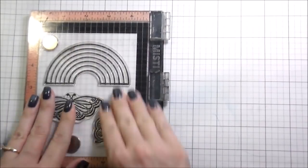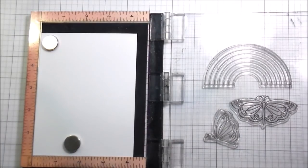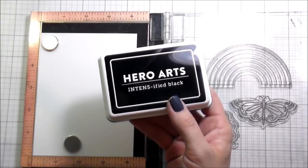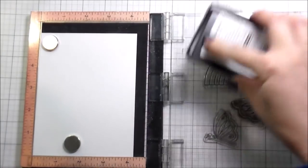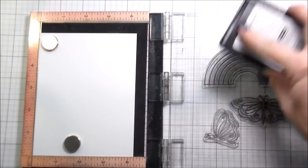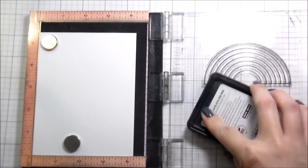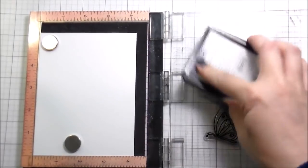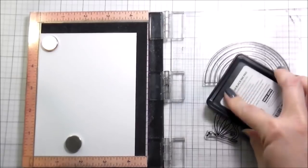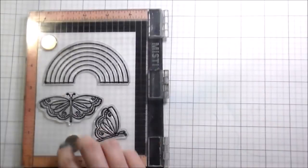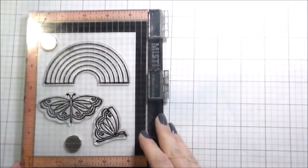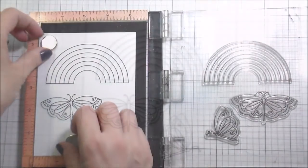I'm going to stamp my pieces out. I'm using 80 pound Neenah Solar White cardstock and Copic Safe ink. I'm going to Copic color them. Nothing super special with the Copic coloring. Pretty much I broke everything down to three colors instead of four. Lightest to darkest, darkest to lightest.